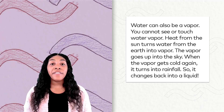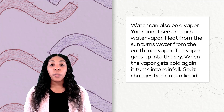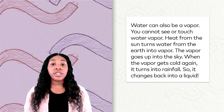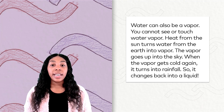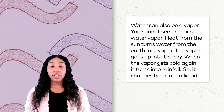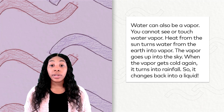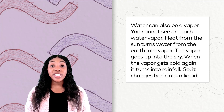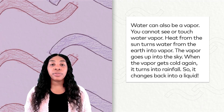Heat from the sun turns water from the earth into vapor. The vapor goes up into the sky. When the vapor gets cold again, it turns into rainfall. So it changes back into a liquid.